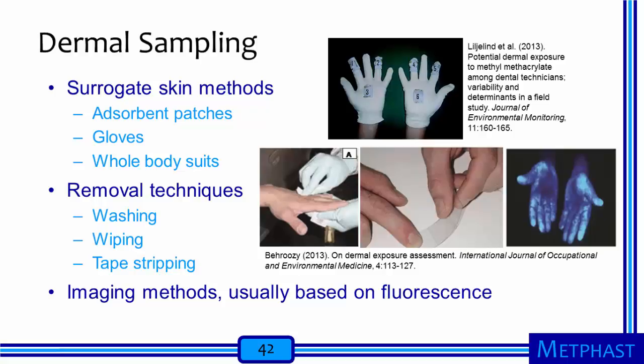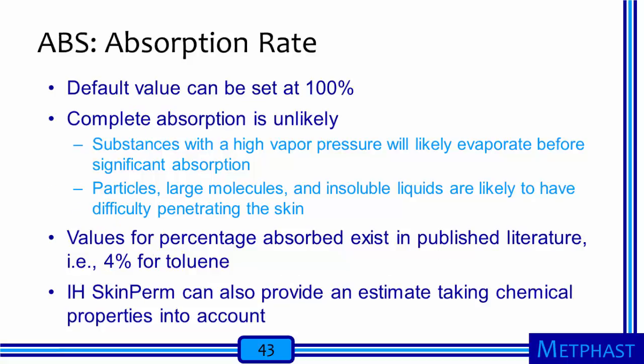For the absorption rate, the default value can be set to 100%, the most conservative assumption. However, complete absorption is unlikely in most cases — substances with high vapor pressure are likely to evaporate rapidly, and particles, large molecules, and insoluble liquids will have a hard time penetrating the skin. Values for percentage absorbed exist in the published literature for some materials — for toluene, published data indicate that only about 4% will be absorbed. We can also use the software IH SkinPerm, which contains absorption rate information for many chemicals.